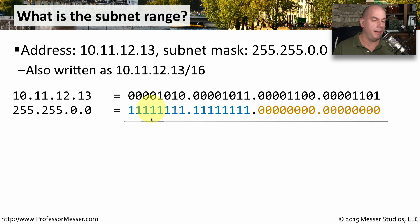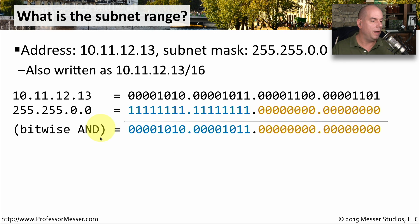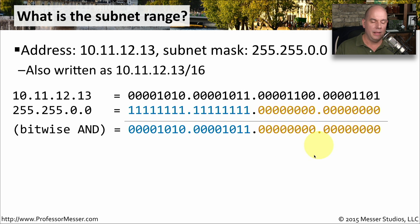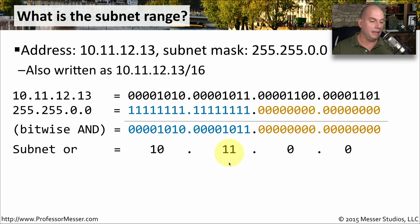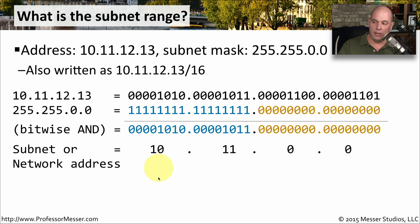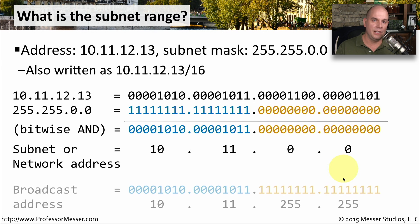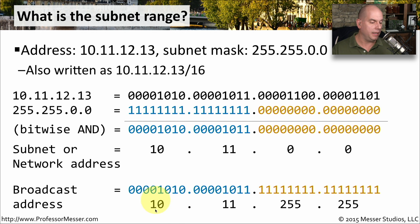Everything after the 16 network bits represents the hosts on this subnet. Performing the bitwise AND — bringing down a 1 wherever both bits are 1, and a 0 everywhere else — gives us our network address. Written in decimal, that is 10.11.0.0 as our subnet address. Changing all those zeros to ones gives us the broadcast address: 10.11.255.255.